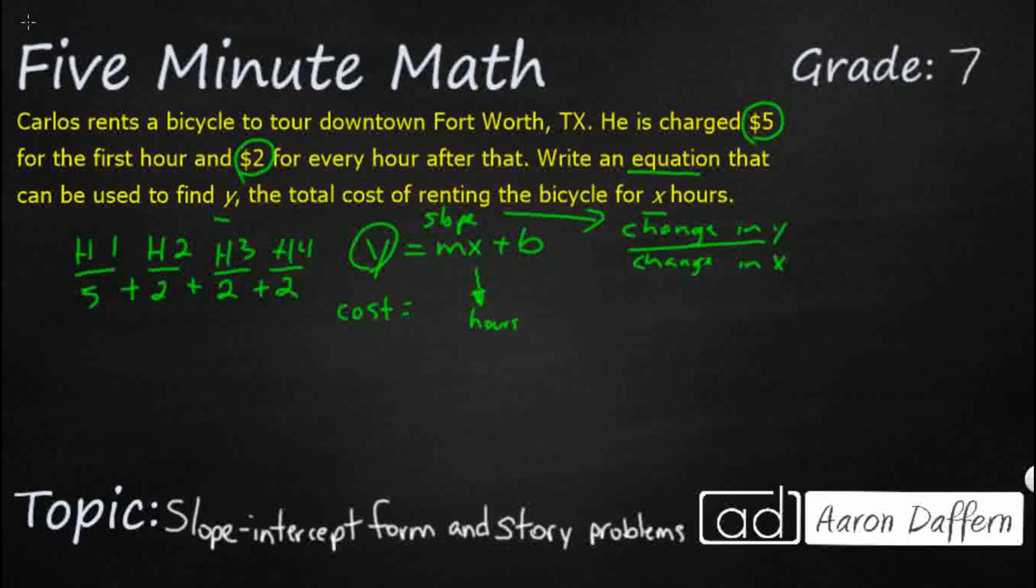And then b is going to be our y-intercept. So if we are looking at a graph, that is going to be where does that line, this linear equation, where does it cross the y-axis where x equals 0? In our problem, though, we're going to put some money on here because we've got this initial dollar. So no matter what happens, Carlos wakes up and looks at a bicycle. He's going to get charged $5.